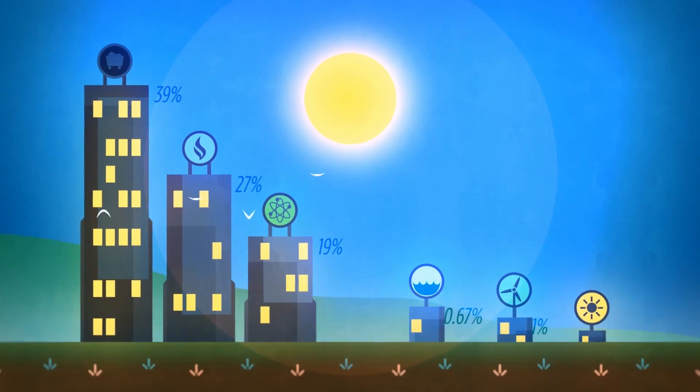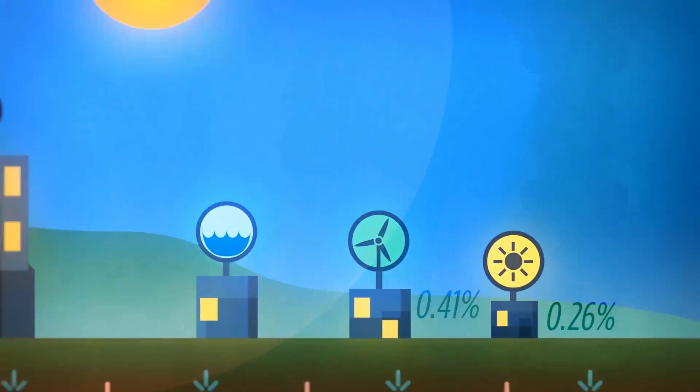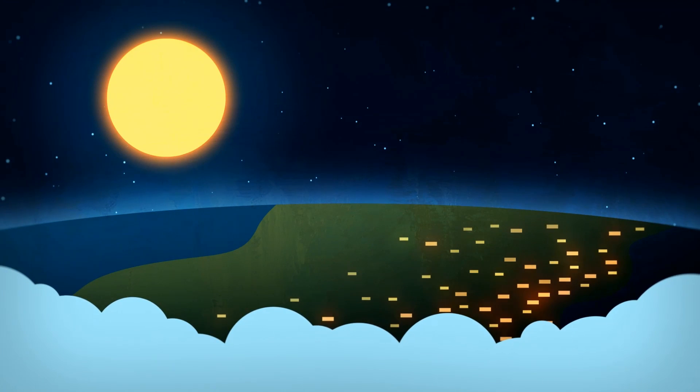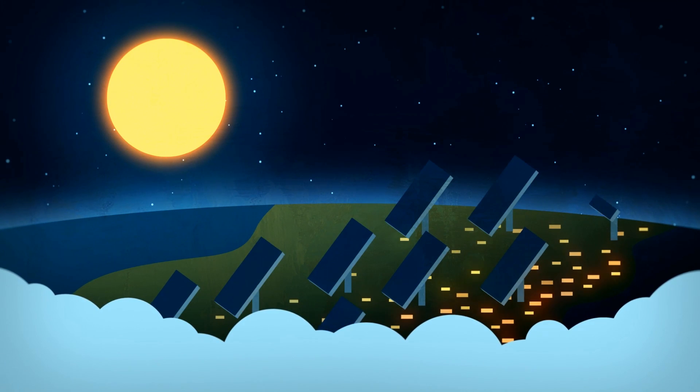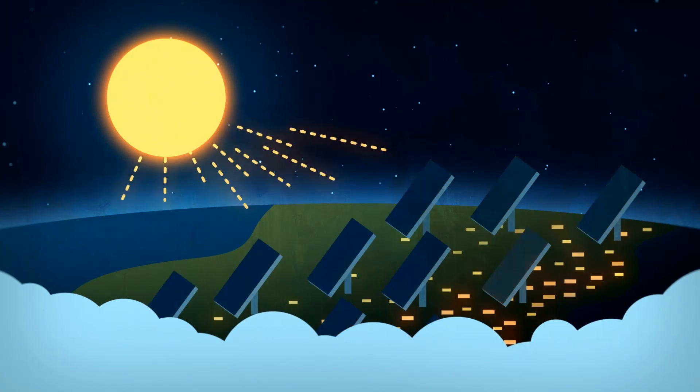But only a tiny percentage of our electricity is made with solar energy. You might think this is due to a shortage of solar panels. But even if we covered all of Earth's surface with them, we still couldn't rely entirely on solar energy.